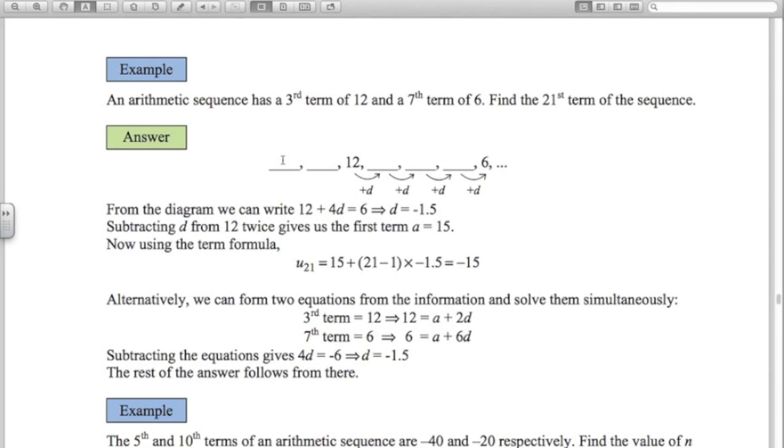The common difference is negative 1.5. I can work out what the 21st term is. A plus N minus 1 times D. The 21st term is negative 15.